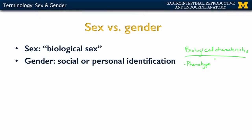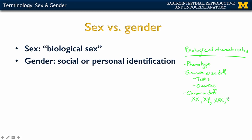Another thing you can look at is gonad differences — we're going to have the testes and we're going to have ovaries, and that will differ between individuals. Also, you're going to have chromosomal differences. A lot of times we think of the XX and the XY — that's a sad little Y right there — but individuals can also have different organizations: you can have an XXX or an XXY. So there's not just this binary in terms of the chromosomes. When I was saying gametes, I meant gonads. Gametes are the oocyte or the spermatozoa — the sperm.